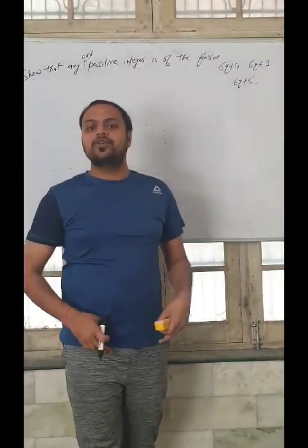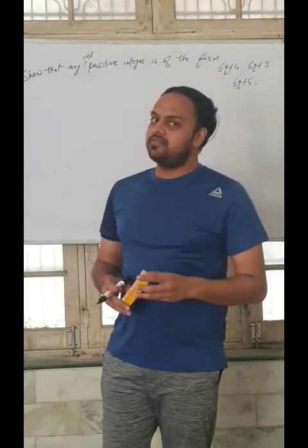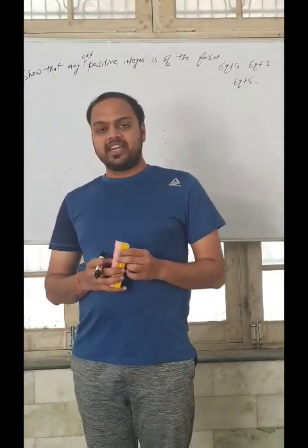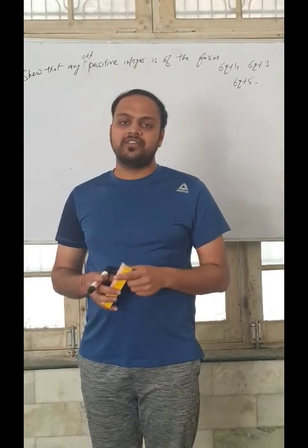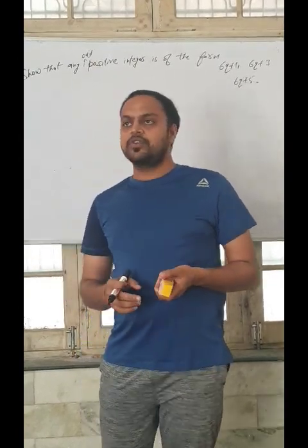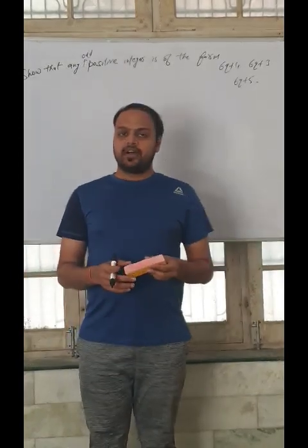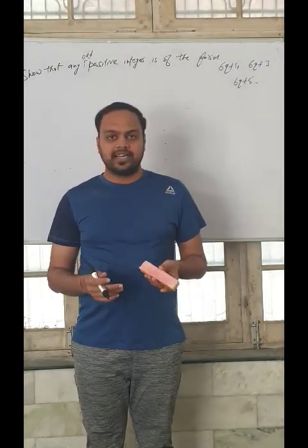Odd integers you know very well. The numbers which cannot be divided by 2 means these are 1, 3, 5, 7, 9 and so on. Or you can say the number which ends with 1, 3, 5, 7, or 9.